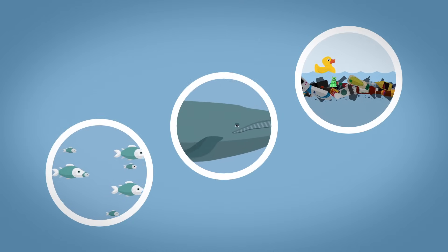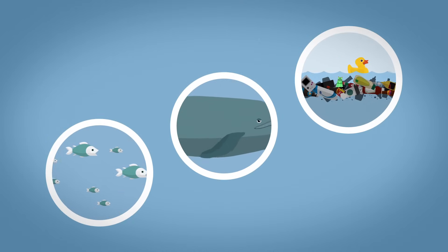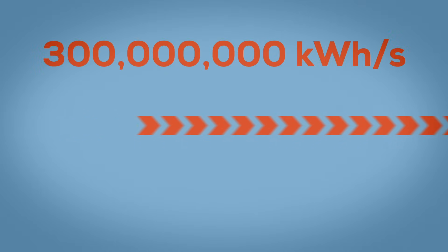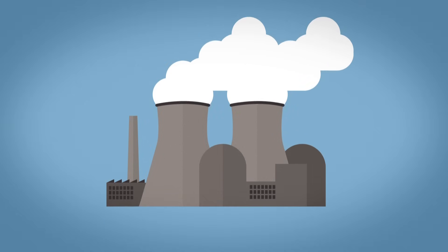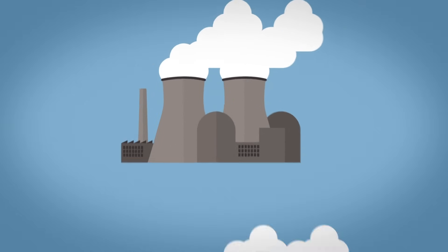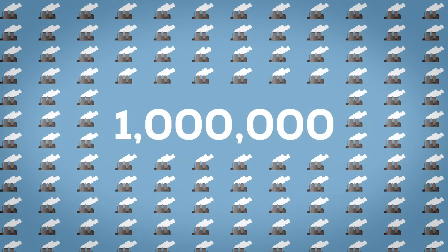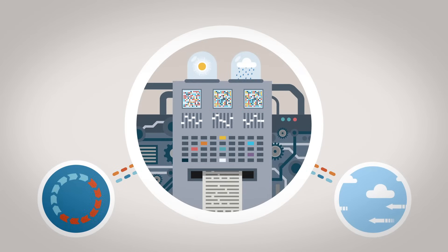Countless species use the Gulf Stream as a means of transport on their trips from the Caribbean to northern areas. But it doesn't just bring us animals. An enormous quantity of warm air also comes with it. In order to produce the same heat which it brings to the shores of Europe we would need 1 million nuclear power plants. That's why we also call the Gulf Stream a heat pump.